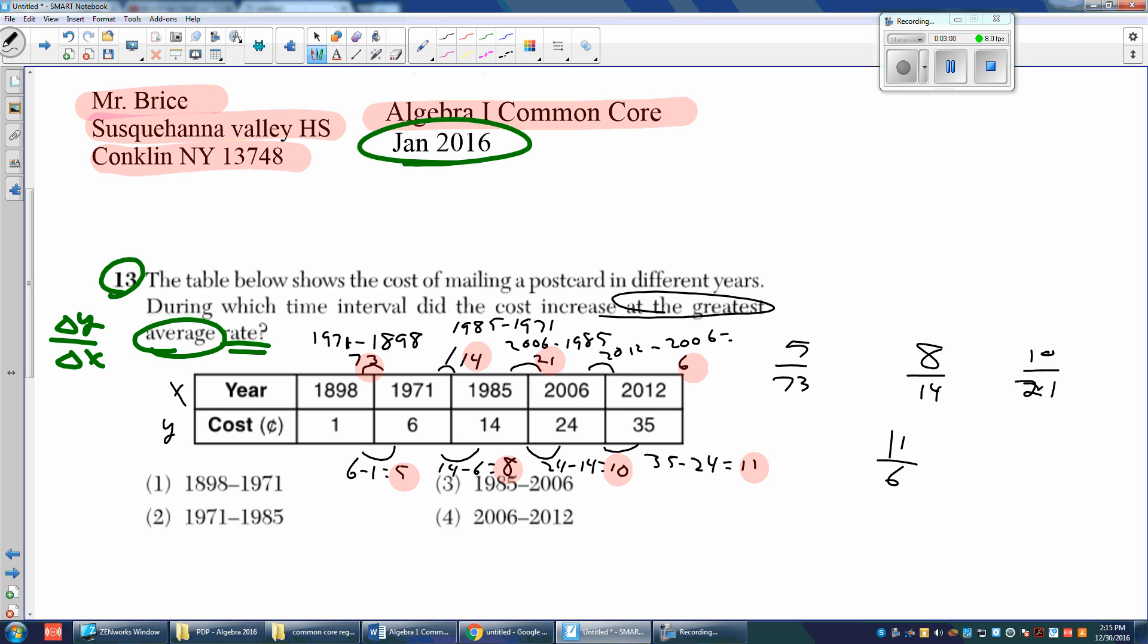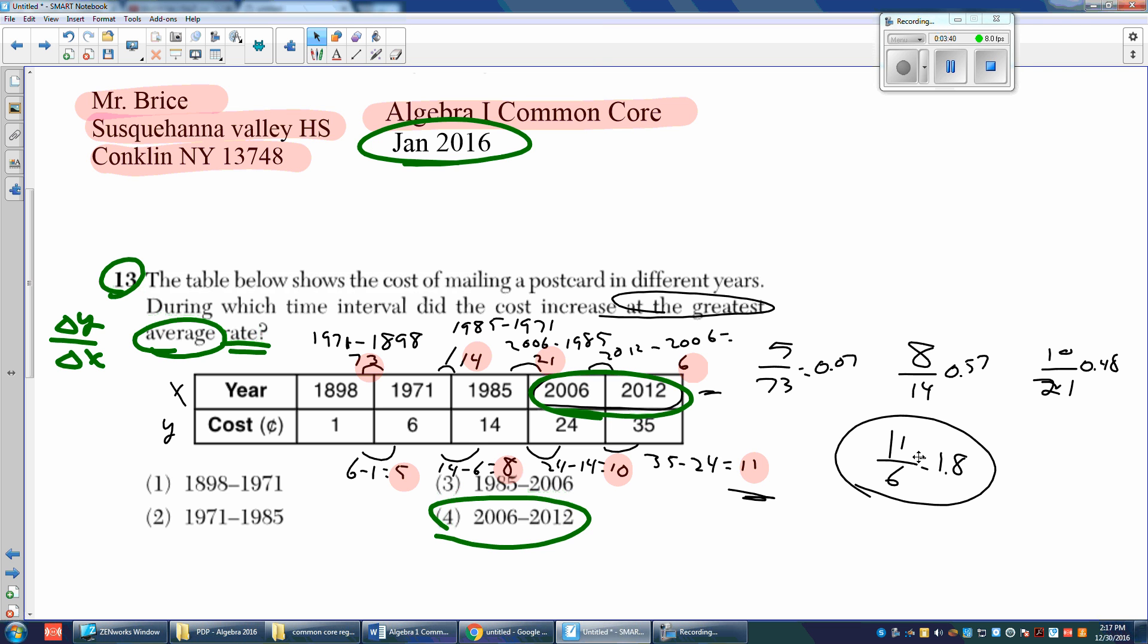So we can turn all of these into decimals. You just do the top divided by the bottom into your calculator. And this one, without even doing any of them, we realize that that one is going to be the greatest because the numerator, the top number, is bigger than the denominator, the bottom number. And that one was the 11 and the 6, which was from 2006 to 2012. Let's see if that's one of our choices. 2006 to 2012 is. Remember, the key to this question is delta Y over delta X, which means subtract the Ys over subtract the Xs.